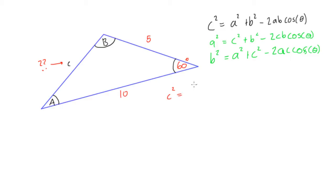So c squared is equal to a squared, well, this was five squared plus b squared, opposite the angle b, we have 10 squared, minus two times a times b, which was 10, times cosine of 60 degrees.